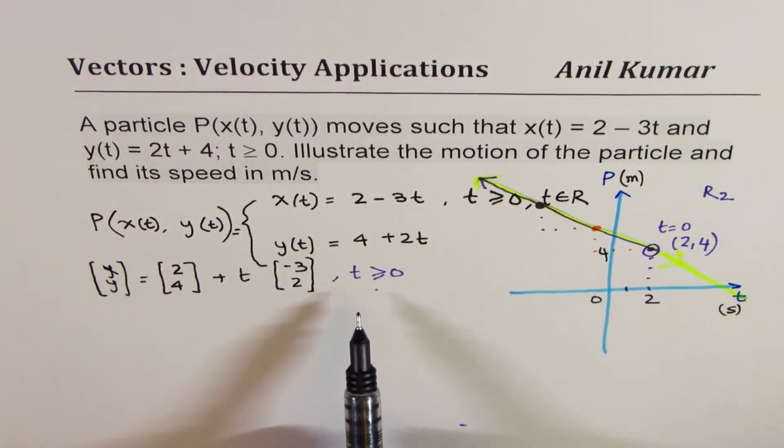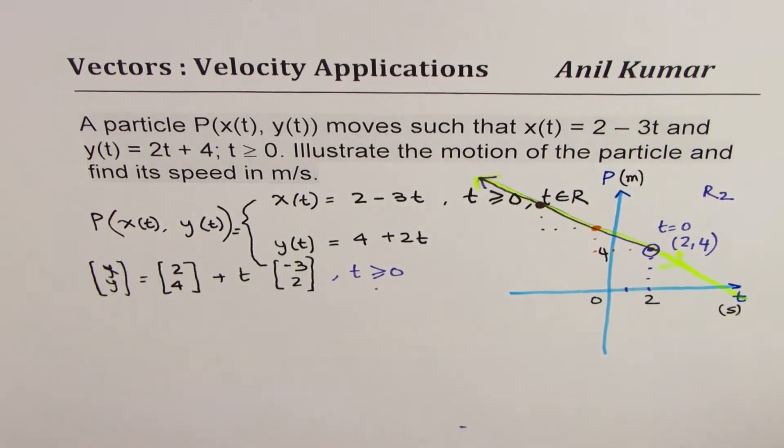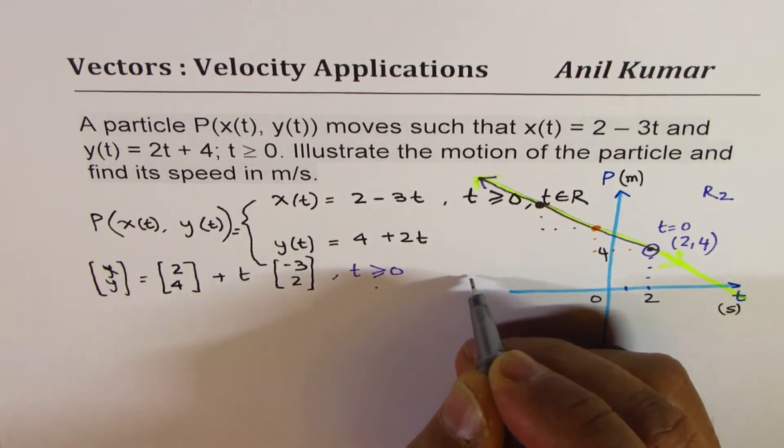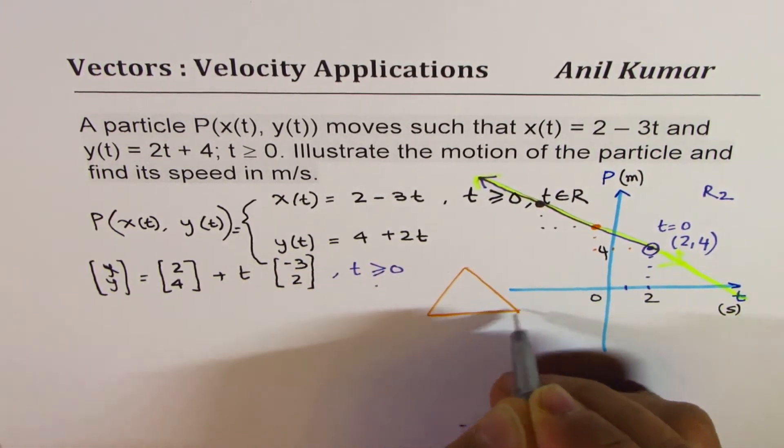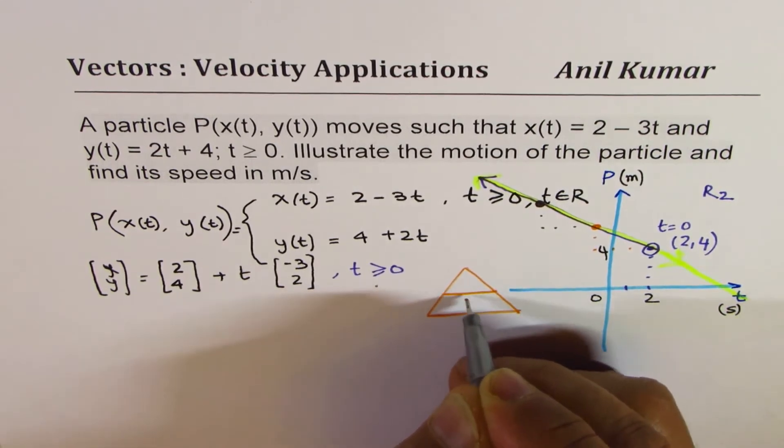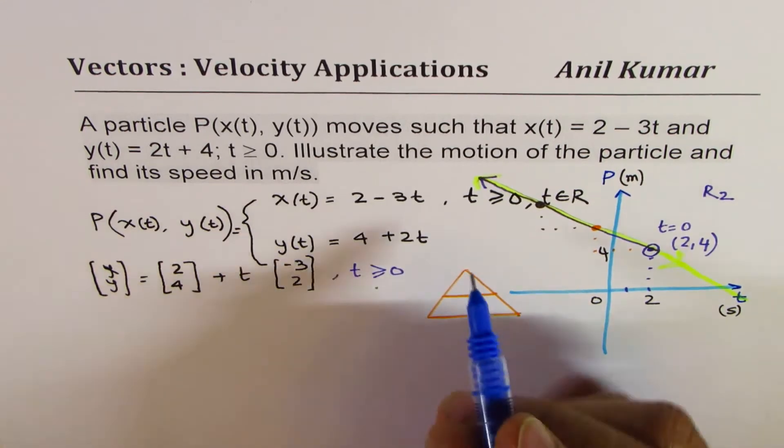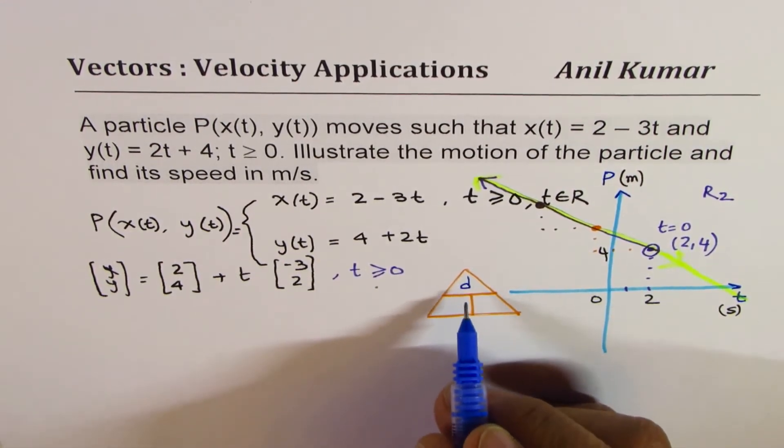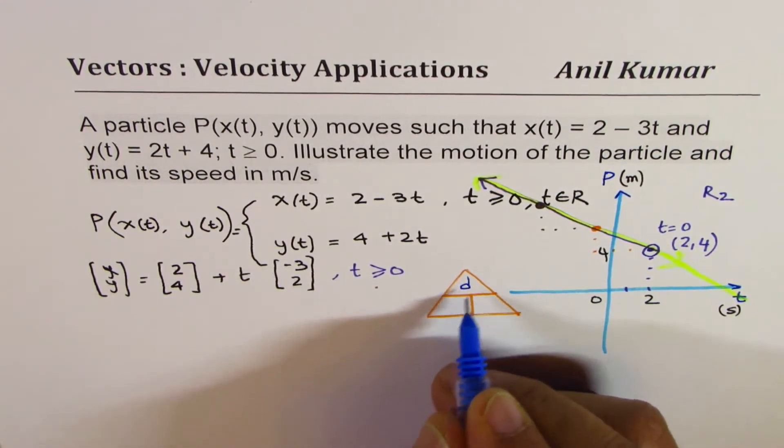Now how do we get speed from the equation which relates position? I hope you remember this triangle. Let me make one here. Actually many students are confused about this point and I've got so many requests, so I'm taking my time to illustrate.